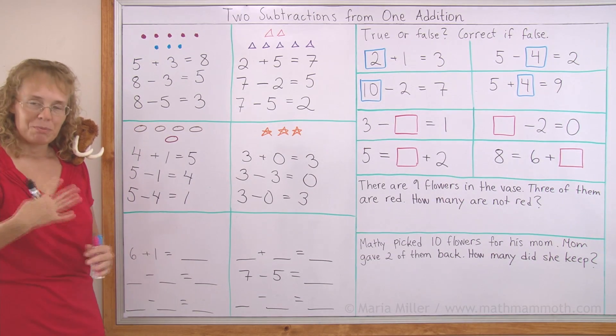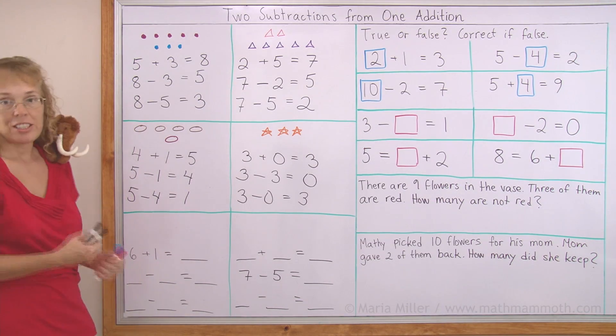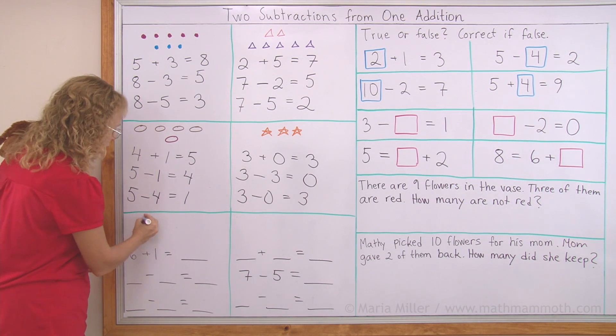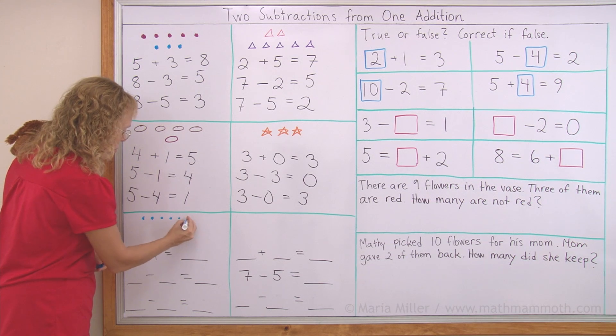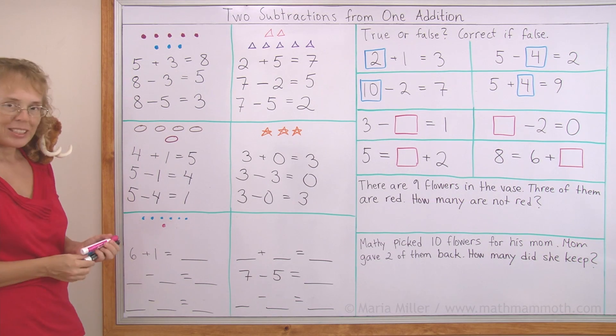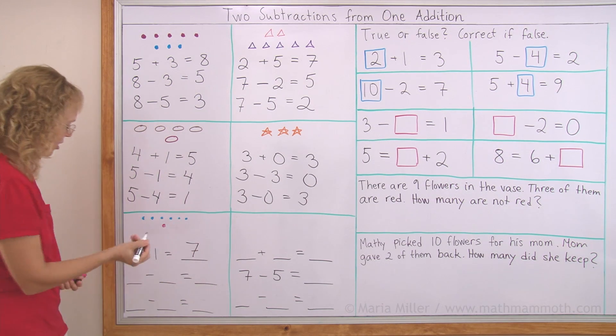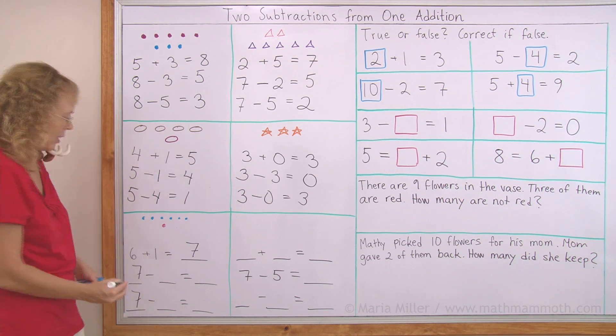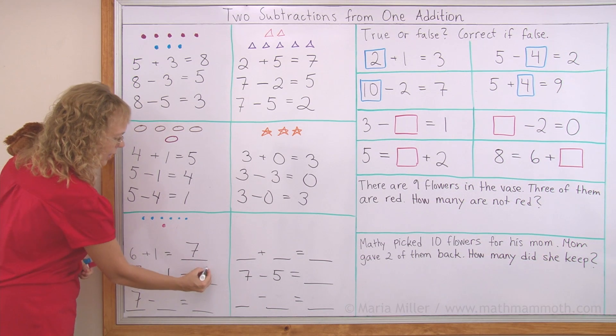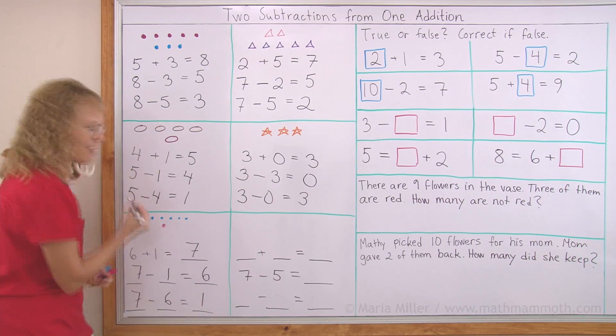Over here it's my turn to draw the picture for this addition and then write the subtractions. Six plus one equals something. I'll draw six something. Blueberries again, yeah. And then one like that. Six plus one equals seven. And then the two subtractions start with seven, both of them. And first I'll take away this. It leaves six. And then I take away all those six blueberries and it leaves one raspberry.